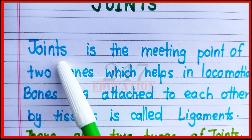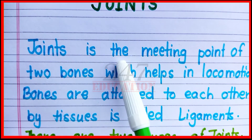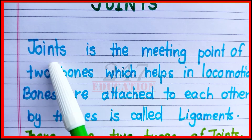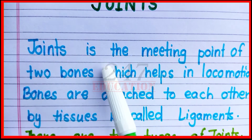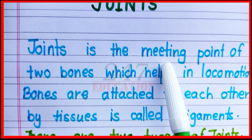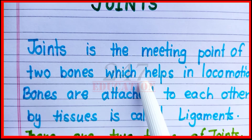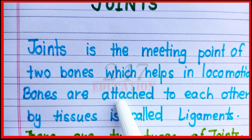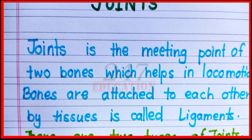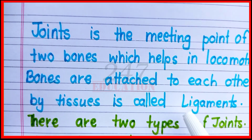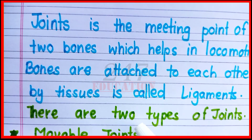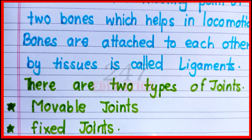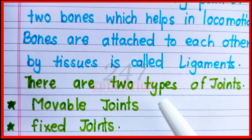Definition of joints: joints is the meeting point of two bones which helps in locomotion. Bones are attached to each other by tissue called ligaments. There are two types of joints: movable joints and fixed joints.